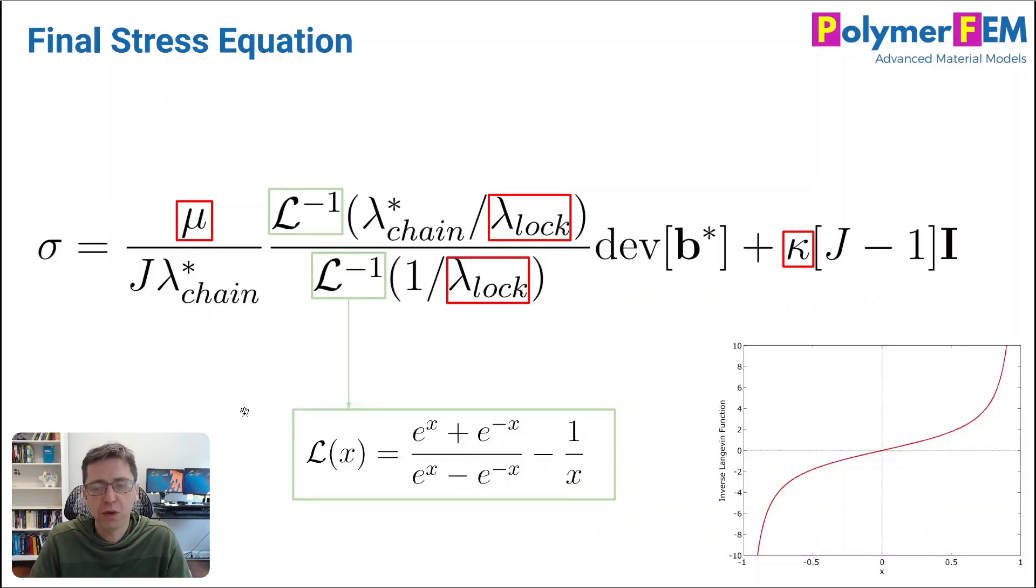And if you do that, the final equation for the stress of the Arruda-Boyce hyperelastic model is this one. This is the Cauchy stress. There are three material parameters in these red boxes here: mu, lambda lock, and kappa.